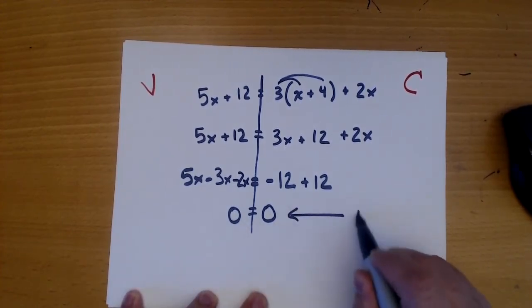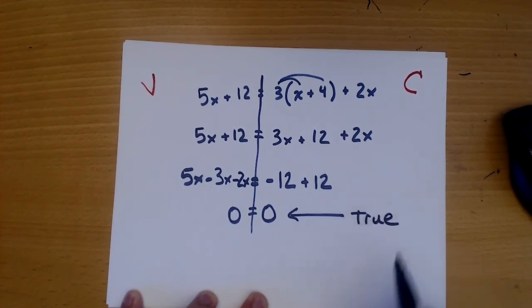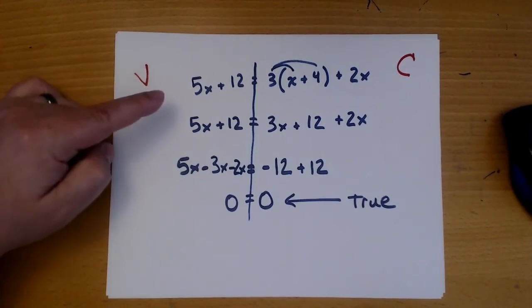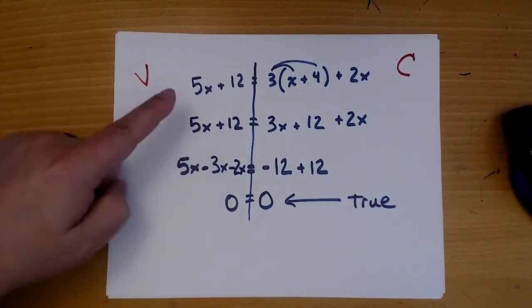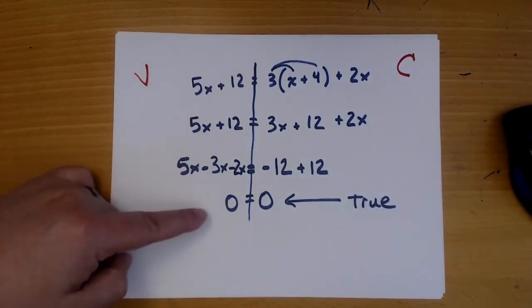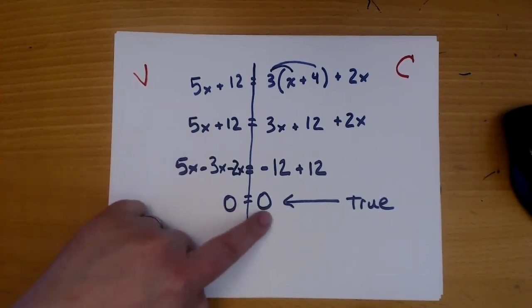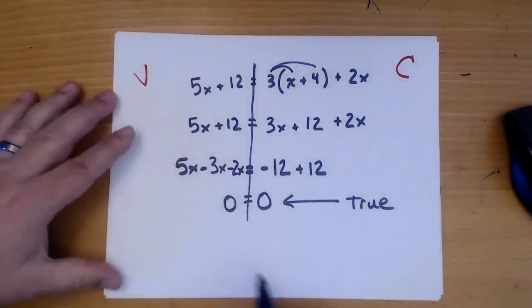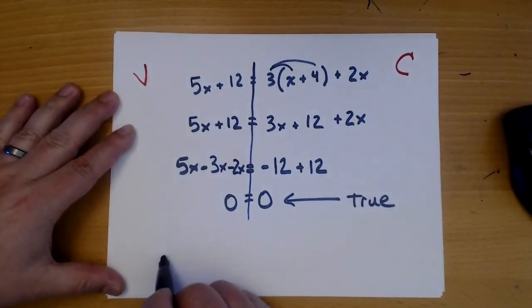This is true, which means that this equation doesn't matter what x is because all of my x's are gone. And we came up with something true. So any number is good in this equation. So you have all real numbers.